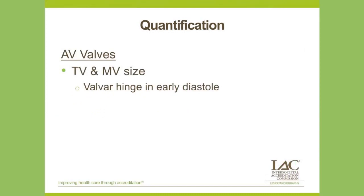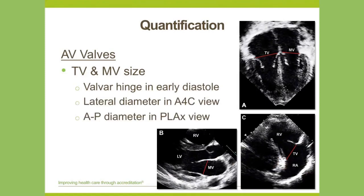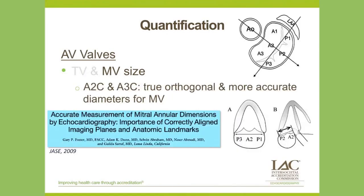For the AV valves, the recommended method to assess atrioventricular valve size involves measuring the annular size from inner edge to inner edge at the valvar hinge points in diastole. We use orthogonal diameters measured in apical four-chamber views and parasternal long-axis views. Apical two-chamber and three-chamber views probably provide better estimates of the orthogonal annular diameters, but apical two-chamber views are sometimes difficult to obtain in children, so most people still use apical four-chamber and parasternal long-axis views.